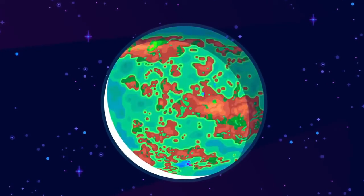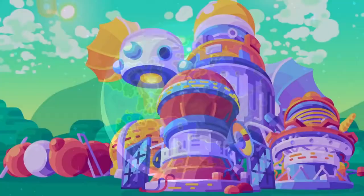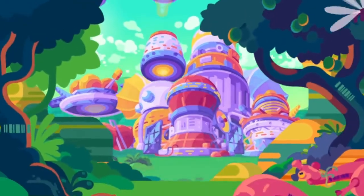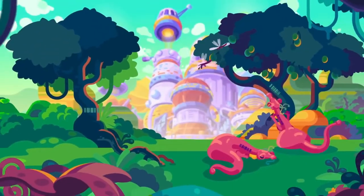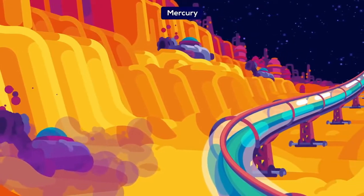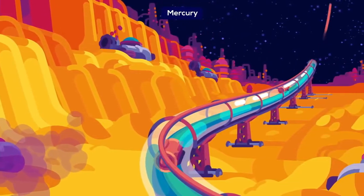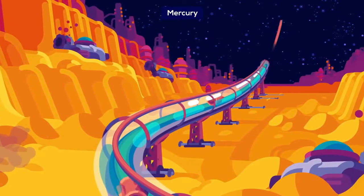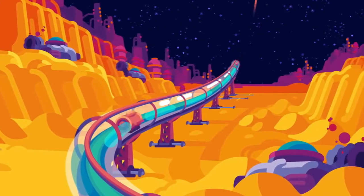A few months ago, the channel Kurtzgesagt had a video talking about terraforming Venus. It was a fascinating video, and I highly recommend checking it out if you haven't already. In it, he talks about an interesting concept of using electromagnetic mass drivers to fire materials into space, specifically for Mercury.